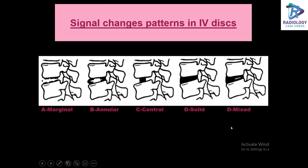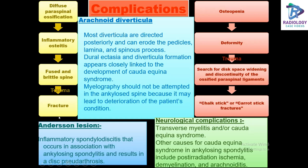Complications seen in patients with AS include fracture — due to diffuse paraspinal ossification resulting in inflammatory osteitis and a fused, brittle spine being exposed to trauma. The chalk stick or carrot stick fracture occurs when the osteopenic bone has resulted in deformity and is exposed to trauma. In that setting, we search for disc space widening and discontinuity of the ossified paraspinal ligaments.